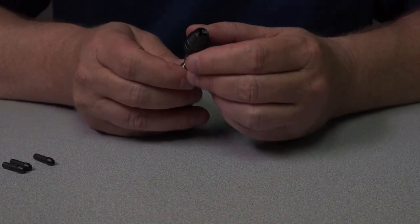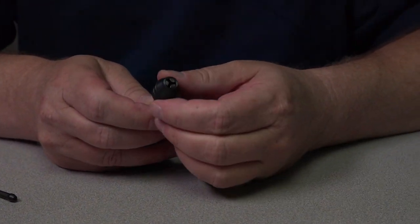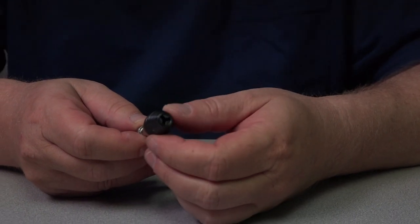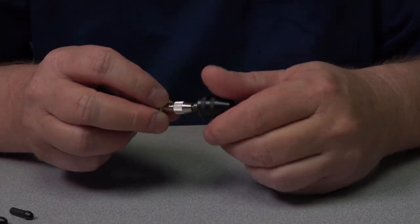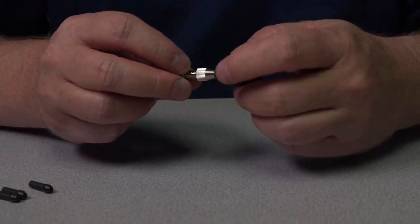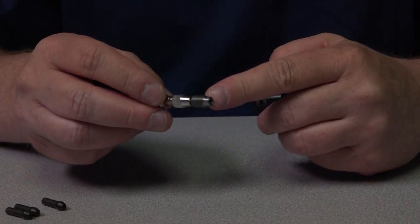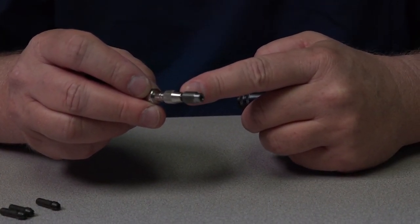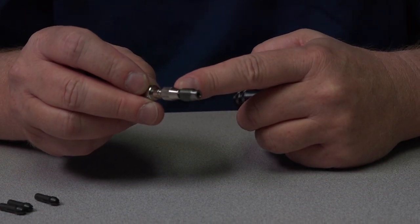Universal chuck closes to 1/64th of an inch, opens to 1/8th of an inch. Our universal chuck is mounted onto an adapter. The adapter is held into the tool. This has a 1/8 shank. There's a 1/8 inch collet here.